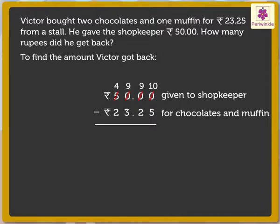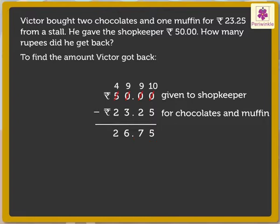Now we can subtract 2325 from 4, 9, 9, 10. 10 minus 5 is equal to 5. 9 minus 2 is equal to 7. 9 minus 3 is equal to 6. Now put a dot after two places from the right side, i.e. in the same place as the dots in the numbers that we subtracted. So now we have the answer in rupees and paise.